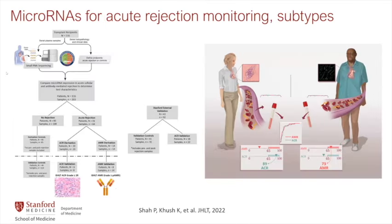On a related note, there's been complementary work in microRNAs. Palak Shah at Inova Fairfax led experiments isolating and sequencing microRNAs from heart transplant plasma, showing panels of microRNAs are differentially expressed in acute rejection. Different microRNAs are present at higher levels in cellular versus antibody-mediated rejection, and he developed algorithms to differentiate ACR from AMR based on microRNA patterns. This work is undergoing further validation and may help distinguish different injury phenotypes through non-invasive means.